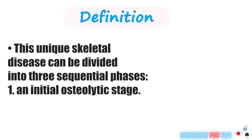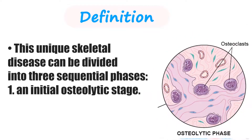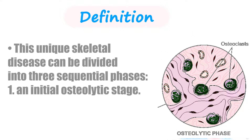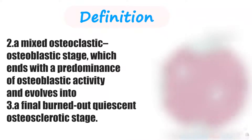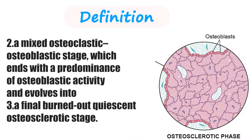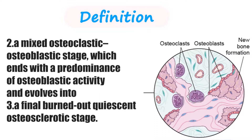This unique skeletal disease can be divided into three sequential phases: 1. An initial osteolytic stage. 2. A mixed osteoclastic-osteoblastic stage, which ends with a predominance of osteoblastic activity and evolves into 3. A final burned-out quiescent osteosclerotic stage.